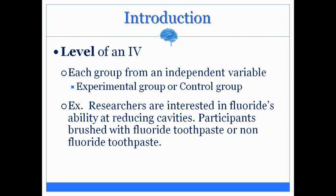Now, what makes up that independent variable? How many levels? It has to be two or more. Those two levels include fluoride and non-fluoride. The fluoride is the experimental group, and the non-fluoride is the control group. So fluoride is level 1, and non-fluoride is level 2.